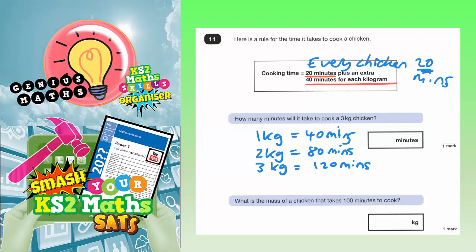So the 3 kilogram chicken just based on its weight will be 120 minutes. But you've got to add on the extra 20, which is the basic that every chicken has.